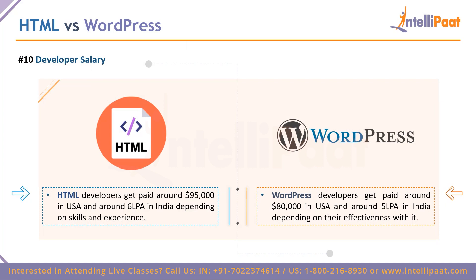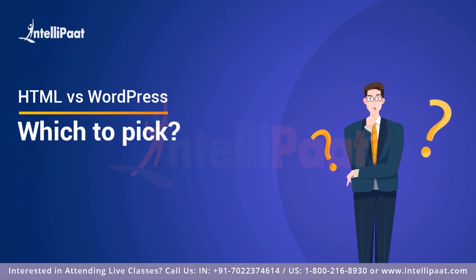The last comparison point is developer salary. HTML developers get paid around $95,000 per year in the USA and around 6 lakhs per annum in India. WordPress developers get paid around $80,000 in the USA and around 5 lakhs per annum. These numbers vary depending on skills, past experience, and certifications, and things can get complex on big projects, but these are the average salaries in the current trend.